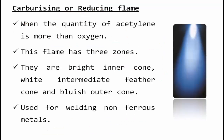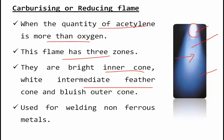The second is the carburizing or reducing flame. When the quantity of acetylene gas is more than oxygen, this flame has three zones: the bright inner cone, the white intermediate feather, and the bluish outer cone. This type of flame is preferred for welding non-ferrous materials like magnesium.